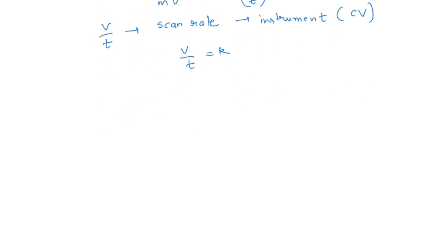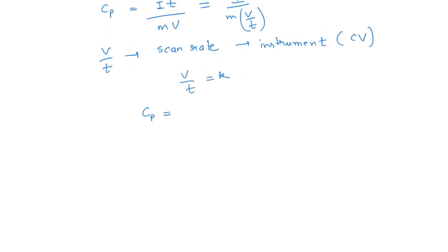We get cp equal to i over mk. From here we get i equal to cp times m times k. Let's say this is equation 1. Okay, so now...